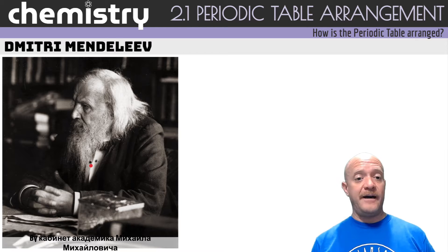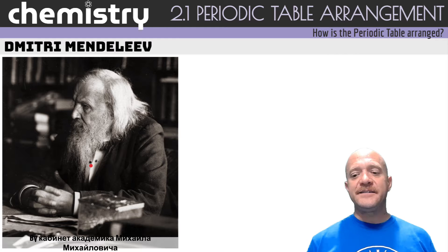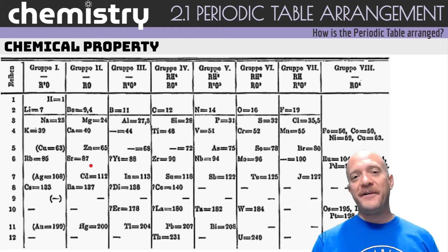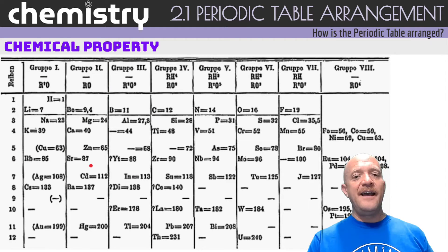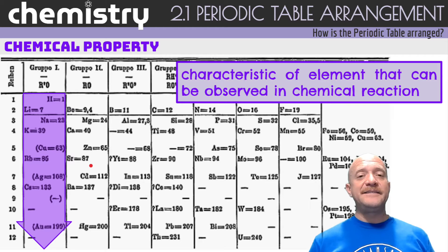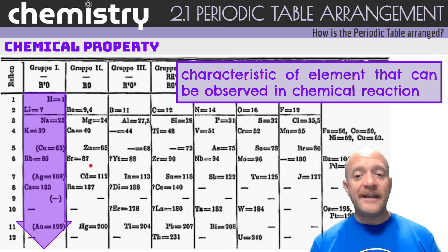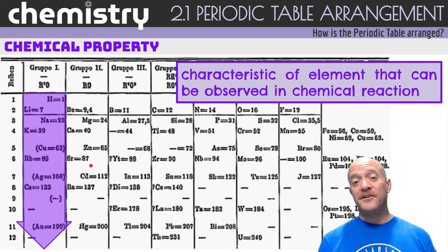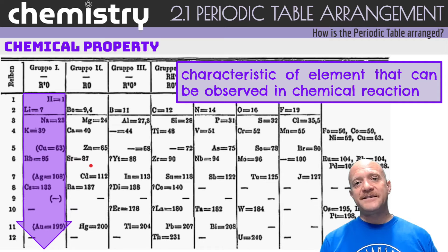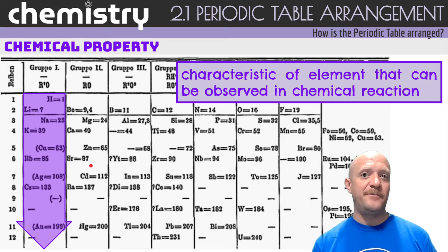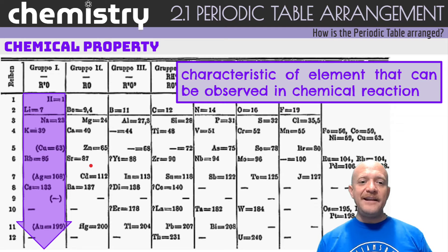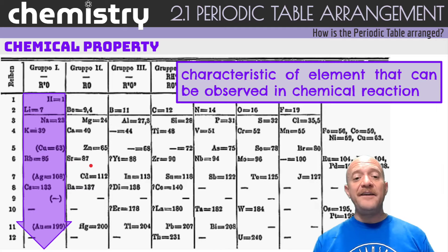In the 1860s, a chemist by the name of Dmitry Mendeleev from Russia noticed some chemical properties among different elements. A chemical property is simply a characteristic of an element that can be observed in a chemical reaction. He noticed that certain elements were able to react with other elements in a particular fashion and that these elements had similarities.